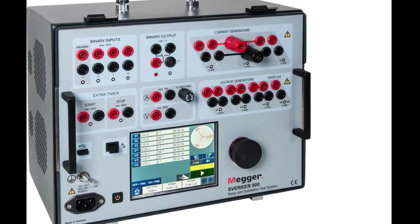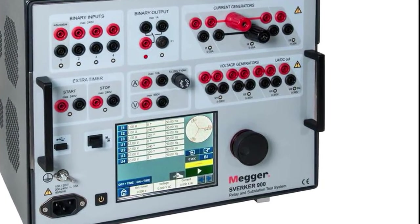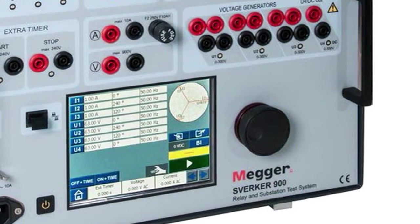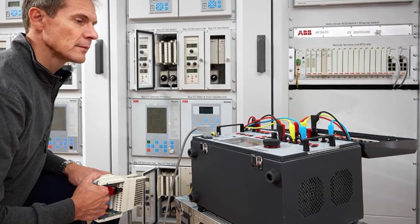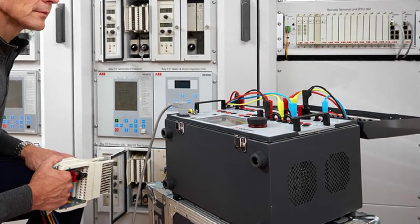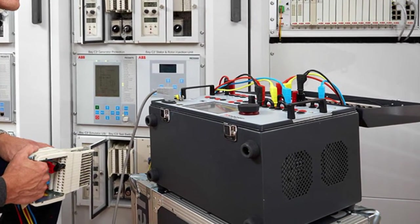Mega are pleased to announce the release of the new Sverker 900 series three-phase relay and substation test system. The unit is a new addition to the highly successful Sverker family which currently includes the Sverker 650, Sverker 750, and Sverker 780 single-phase range of testers.